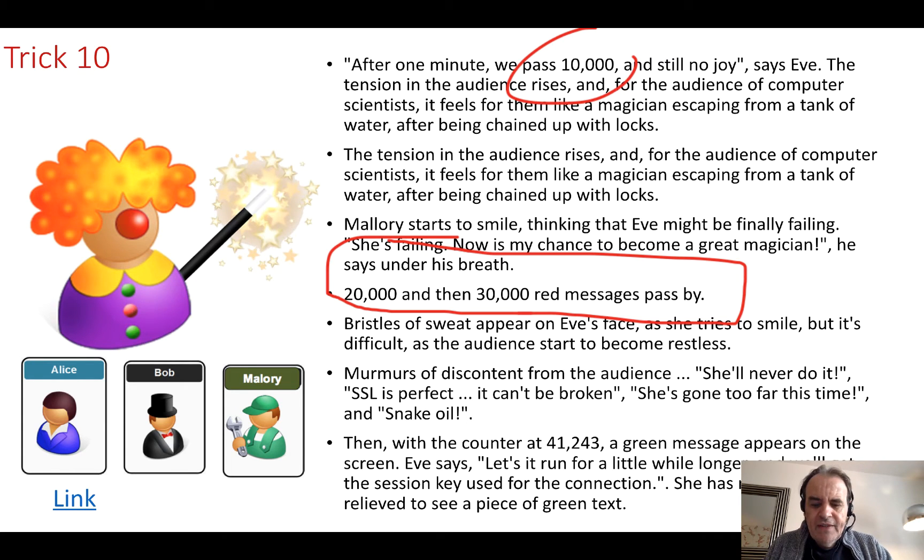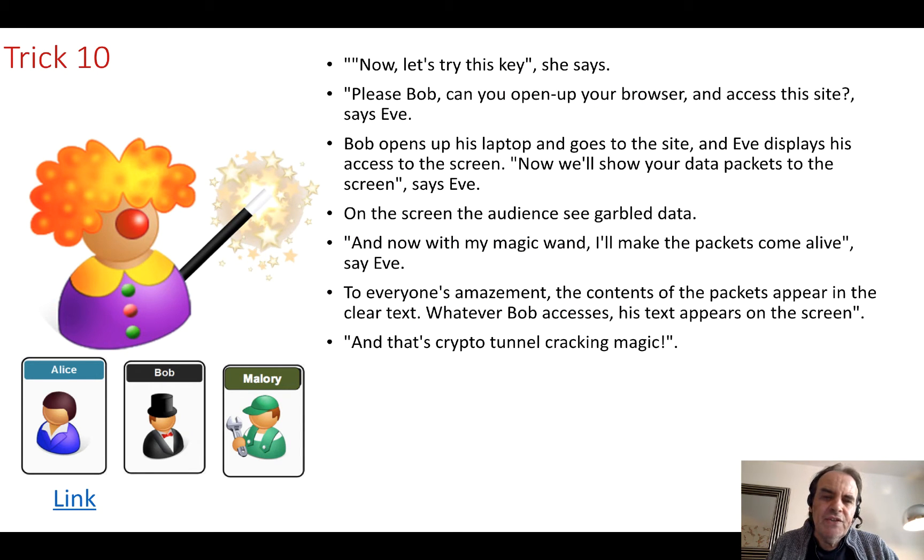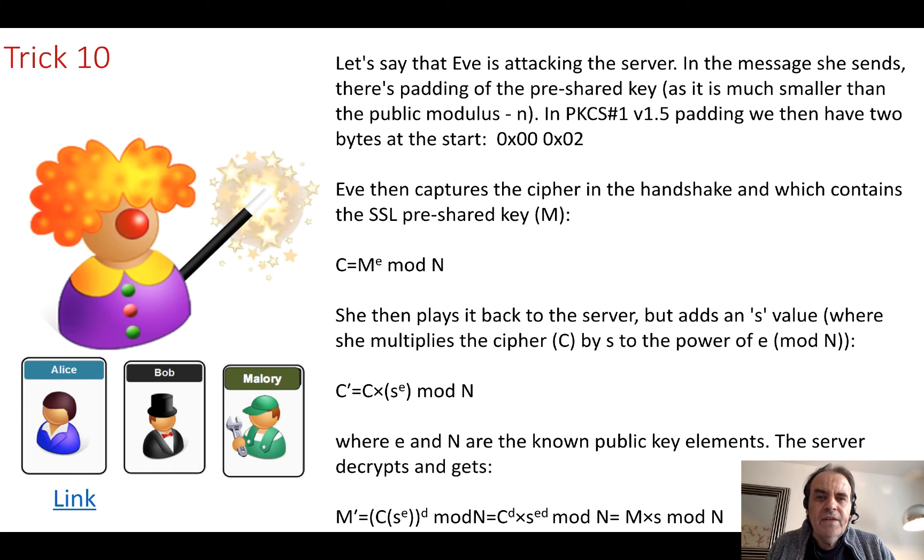All of a sudden when it gets to 41,243, a message appears that it's been successful. She gives it a little bit longer, and then she is able to crack the communications or crack the session key that was involved in the session. She then goes and gets Bob to access the site, and we go from seeing something that is garbled to be able to see whatever Bob is actually accessing.